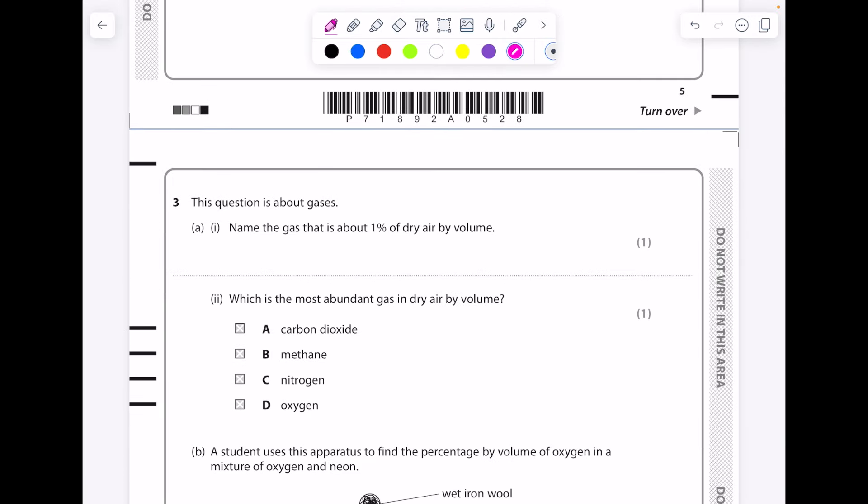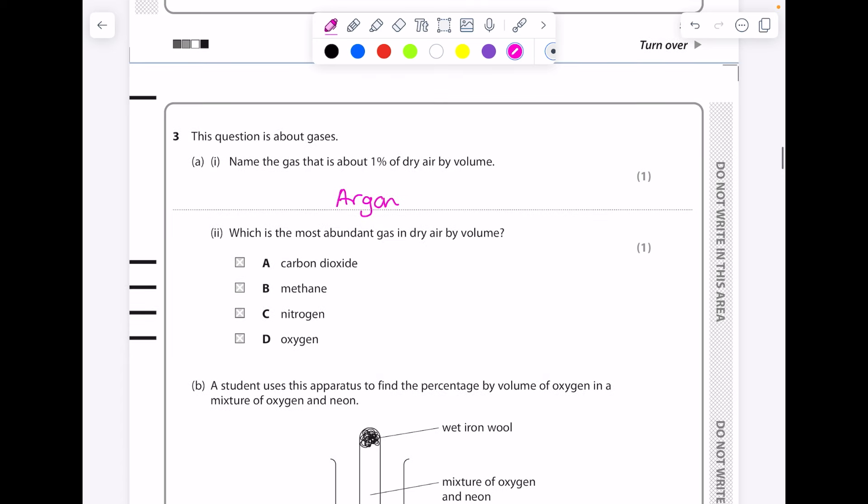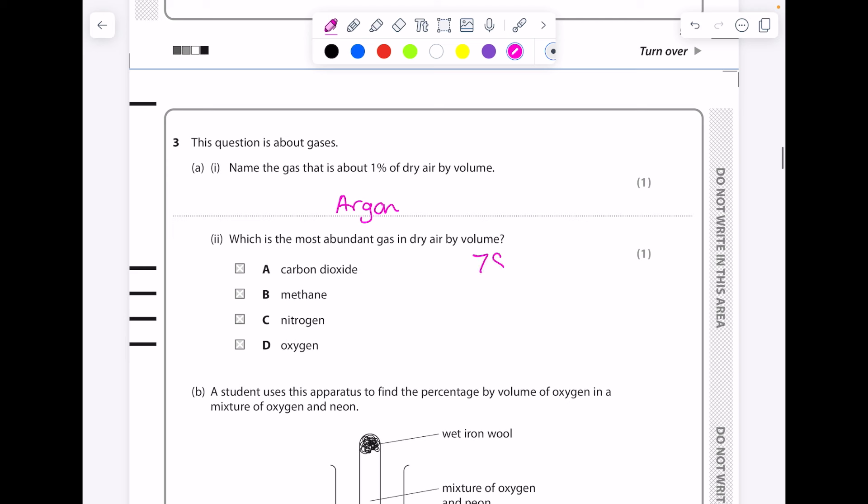This question is about gases. Name the gas that is about 1% of dry air by volume. That's argon. Which is the most abundant gas in dry air by volume? So 78% of air is nitrogen, around 21% is oxygen, 0.04% carbon dioxide, 1% argon, then you've got water vapor. So you can see quite clearly that it's nitrogen.